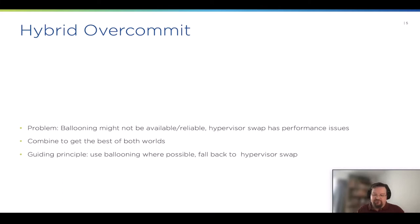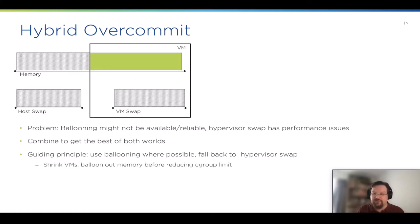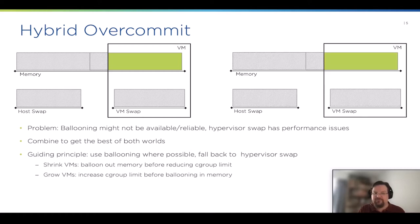I think we've established that ballooning might not always be available or reliable, but hypervisor swap can have severe performance issues. So the solution is straightforward: combine both to get the best of both worlds. The guiding principle is use ballooning where it's possible and fall back to hypervisor swap where it's necessary. Simply, if you want to shrink a VM, you would first try to balloon out some memory and only then reduce the cgroup reservation. Conversely, if you grow a VM, you first grow the cgroup limit and then balloon in the memory that is now available.